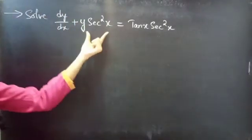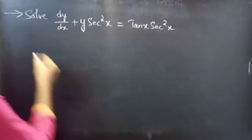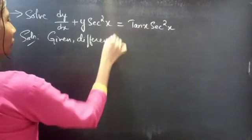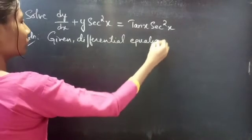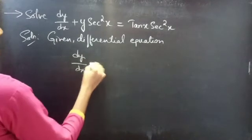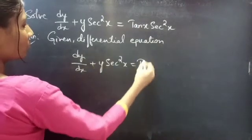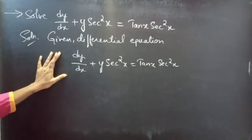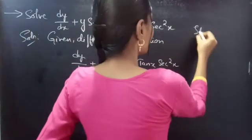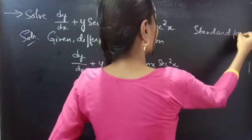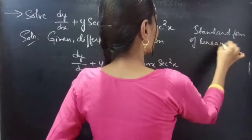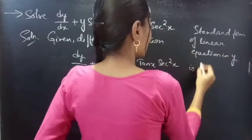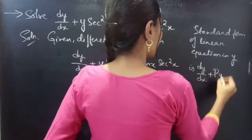Problem: solve dy/dx plus y·sec²x equals tan x·sec²x. Solution — given differential equation: dy/dx plus y·sec²x equals tan x·sec²x, which is in linear form. We know that the standard form of a linear equation in y is dy/dx plus P·y equals Q.